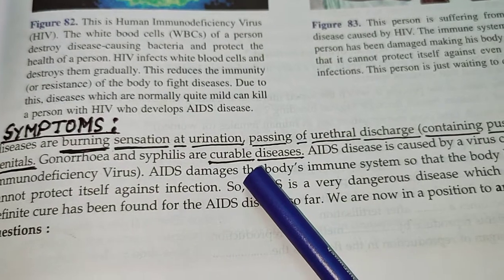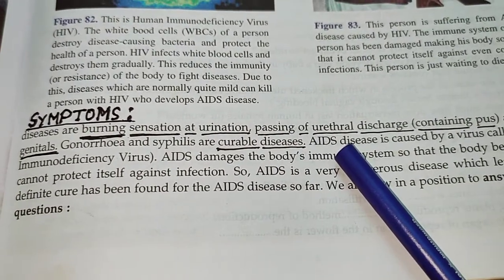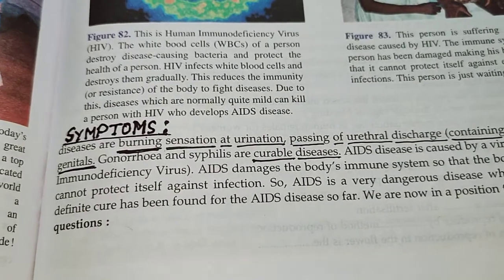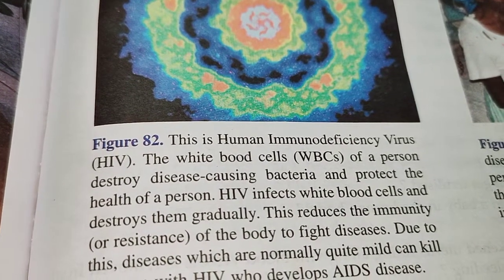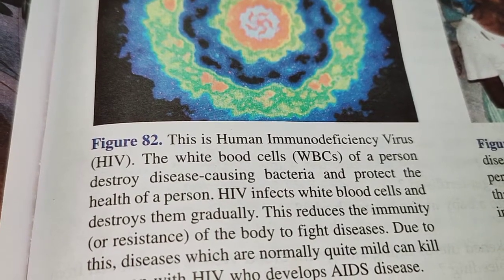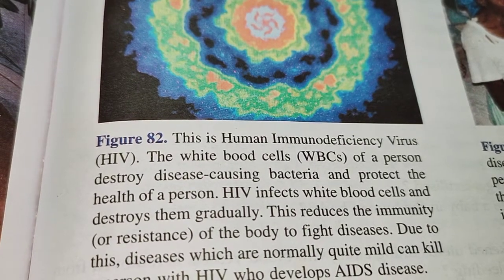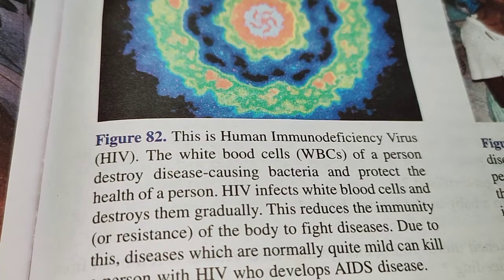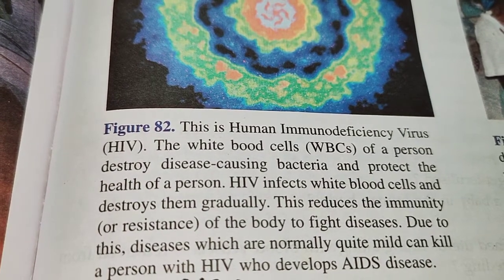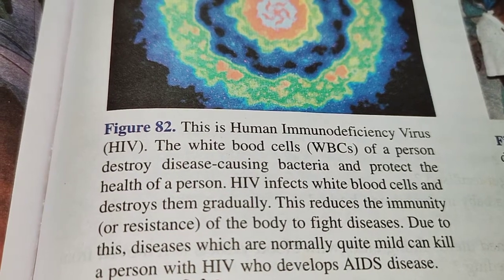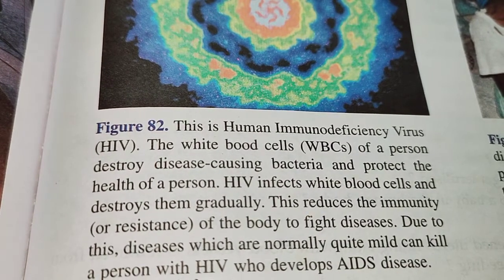Although gonorrhea and syphilis are curable diseases, AIDS damages the body's immune system so badly that there is no cure. AIDS is caused by the HIV virus. HIV, or human immunodeficiency virus, destroys the white blood cells — the cells which destroy disease-causing germs and protect the body. Once infected, immunity becomes reduced and the body cannot fight diseases. As a result, normal conditions like a mild cold, cough, or fever can kill a person infected with HIV.